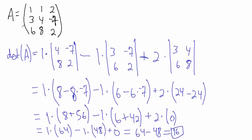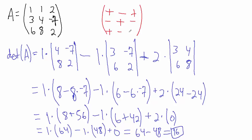What we could have done instead was use the second row or even the third row if we wanted to. Or we could have used the first column or the second column or the third column. The point is we didn't have to use the first row, but what we do want to be careful of is we want to make sure that we follow the pattern with the signs. When we use the 1 it was a positive 1, when we use this one it was a negative 1, when we use this 2 we had a plus sign. Now if we used the 3, 4, or negative 7, they would follow the alternate pattern: minus, plus, minus. Or if we used the 6, 8, and 2, they would follow plus, minus, plus.